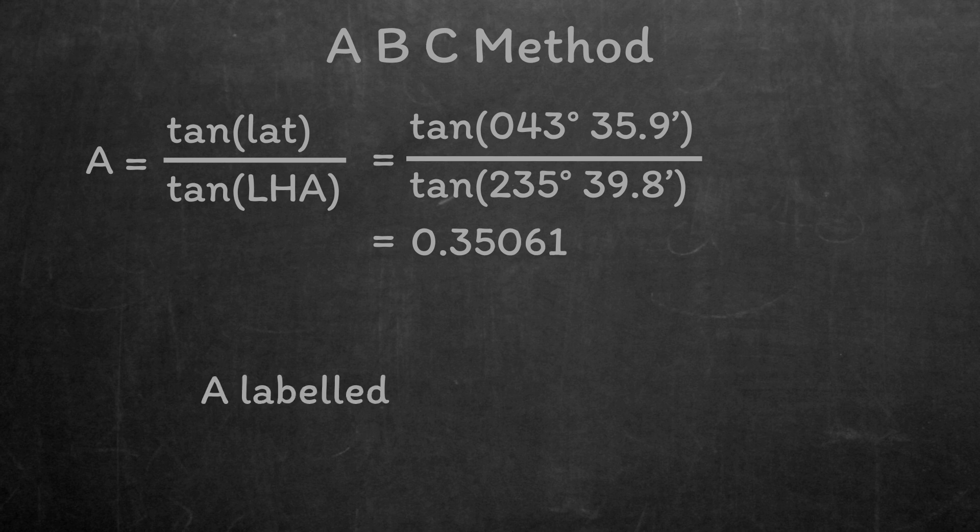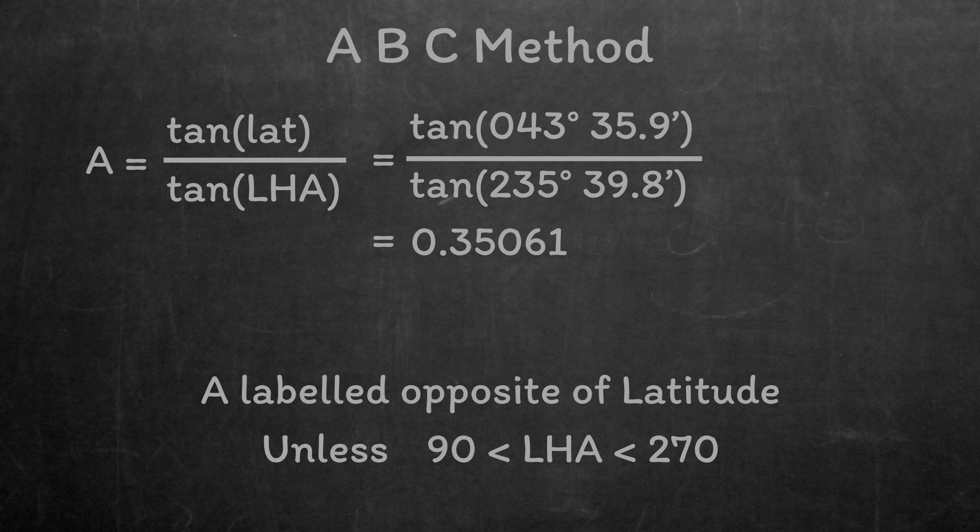A is labelled as the opposite of your latitude, unless the local hour angle is between 90 degrees and 270 degrees. In our case, local hour angle is 235, so we label A as the same as our latitude. So it becomes 0.35061 north.